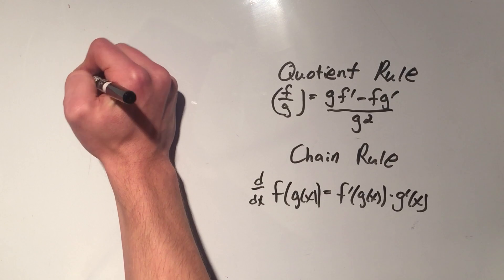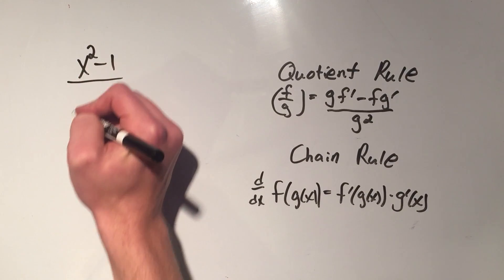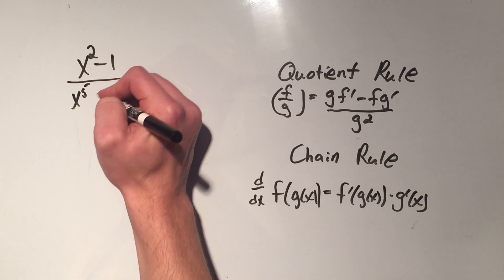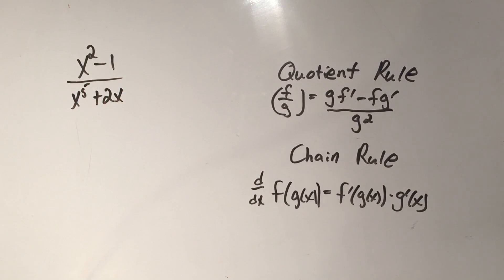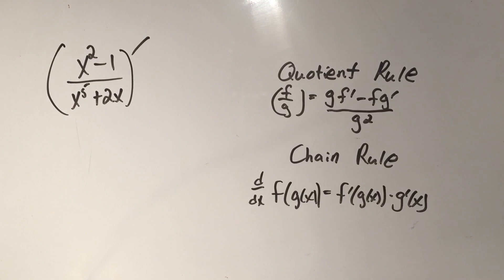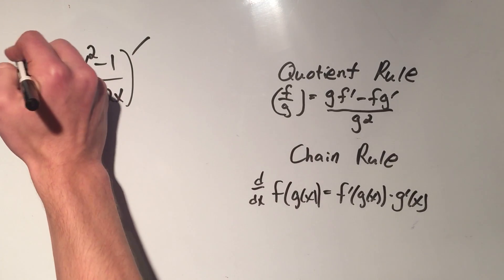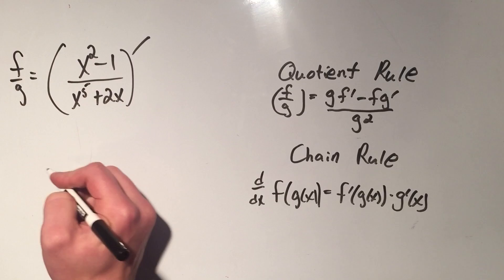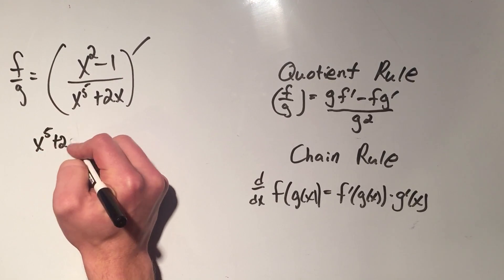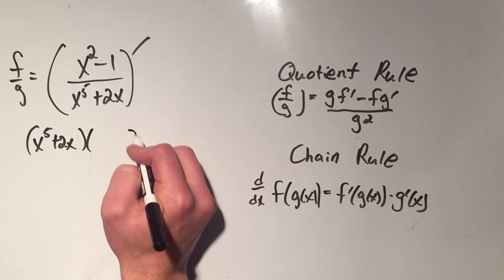Let's do an example. Let's say x squared minus 1 over x to the fifth plus 2x, and I want to take the derivative of that. It says it's low — that's the bottom — times d high, so I take the derivative of the high.